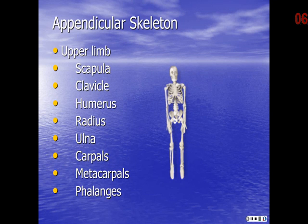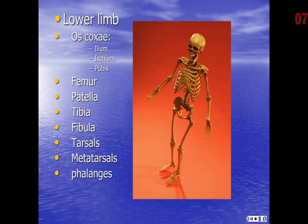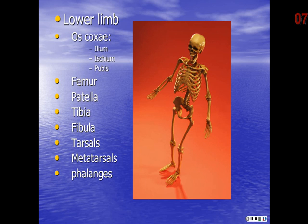The lower limb begins with the os coxae or pelvis, made of three fused segments: the ilium at the sides, the ischium at the bottom and back, and the pubis in the front. Traveling distally we have the femur, the large bone in the upper leg; the patella or kneecap; the tibia, which is the large bone in the lower leg; and the fibula, which is the small lateral bone in the lower leg — fibula has an L in it for lateral. Then come the tarsals in the ankle, metatarsals in the feet, and phalanges of the toes. The patella is a sesamoid bone embedded in the quadriceps tendon but not attached directly to bone. The phalanges of the feet follow the same pattern as the hands with the number of segments.